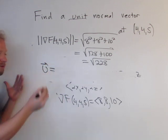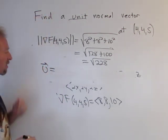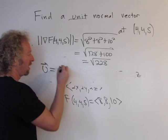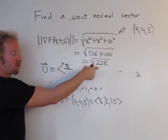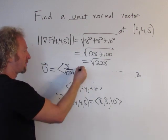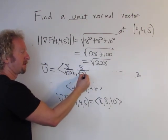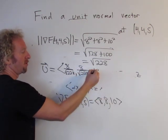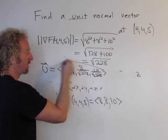So our final answer, our unit vector that is normal to our level surface or to our sphere, I'll call it u, it's going to be 8 over the square root of 228, comma 8 over the square root of 228, and then 10 over the square root of 228. And that's it.